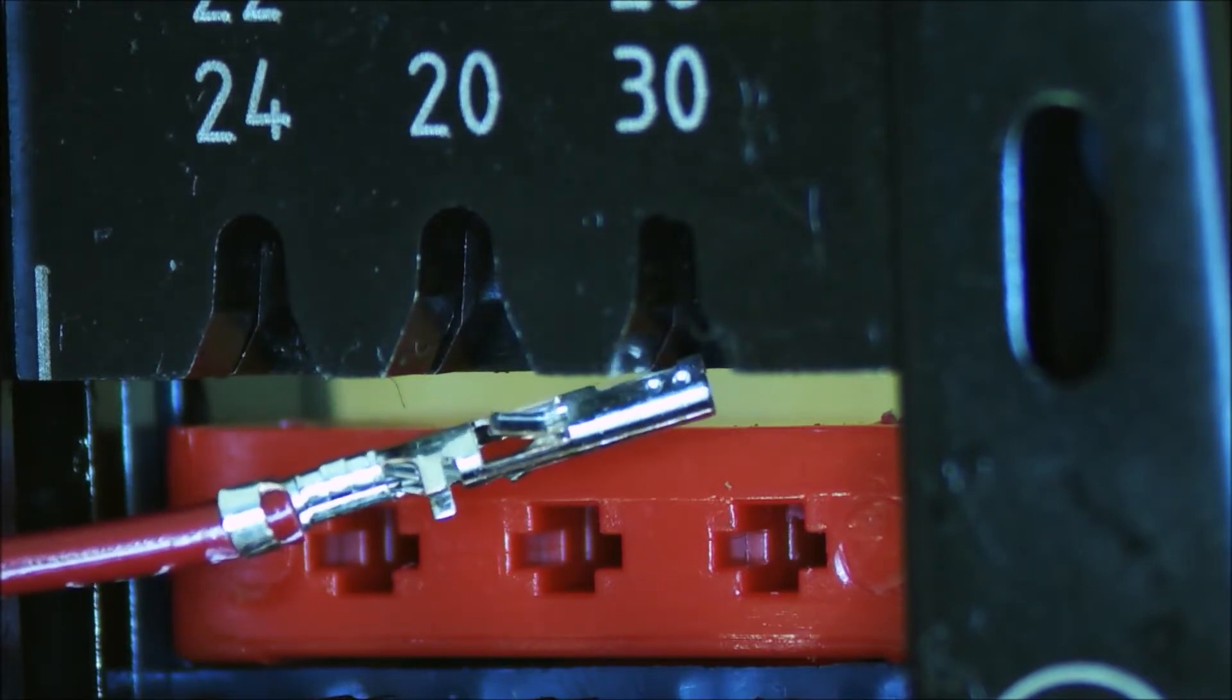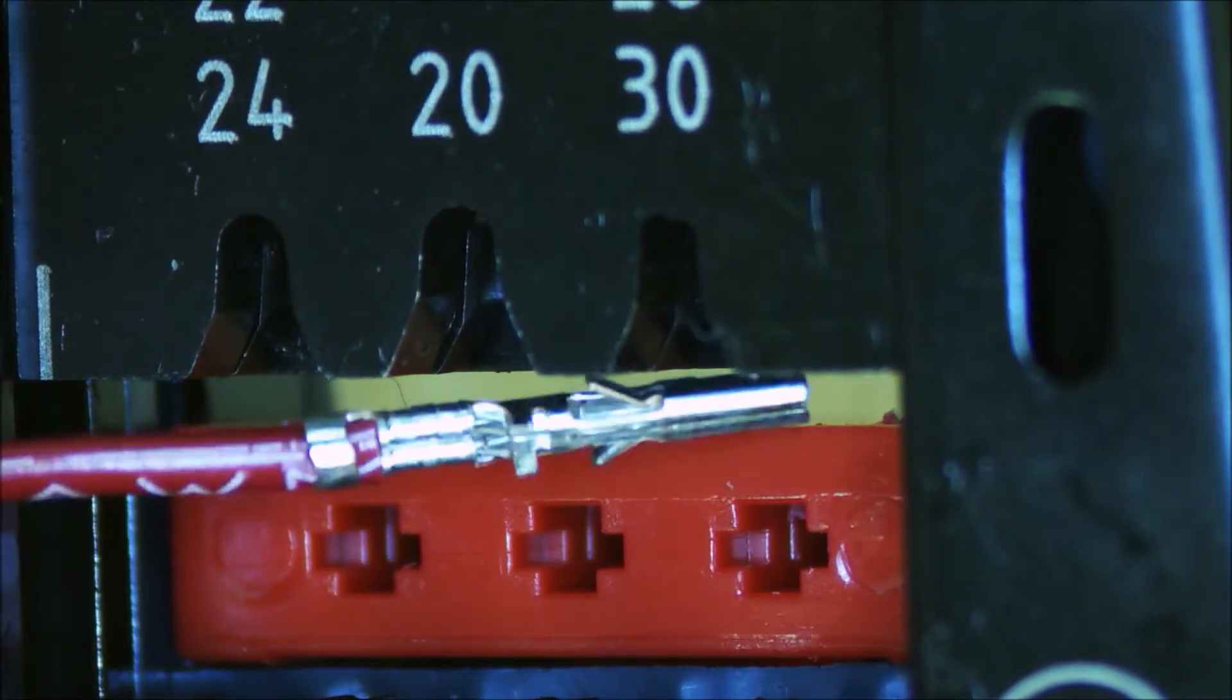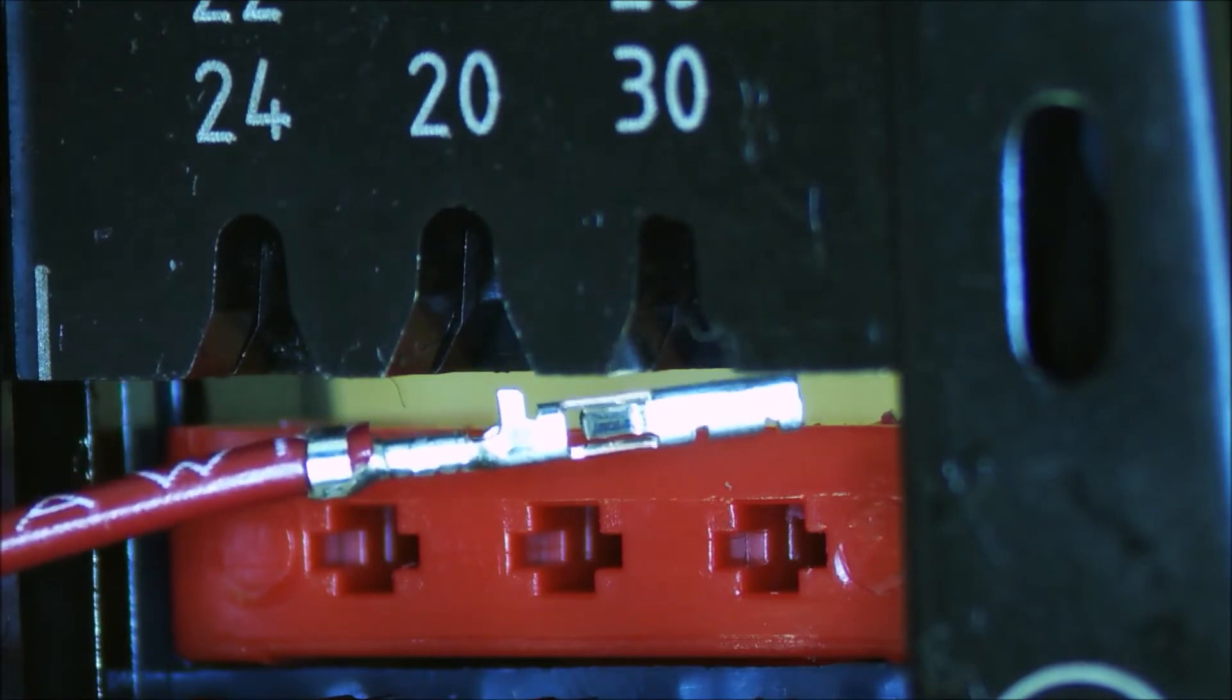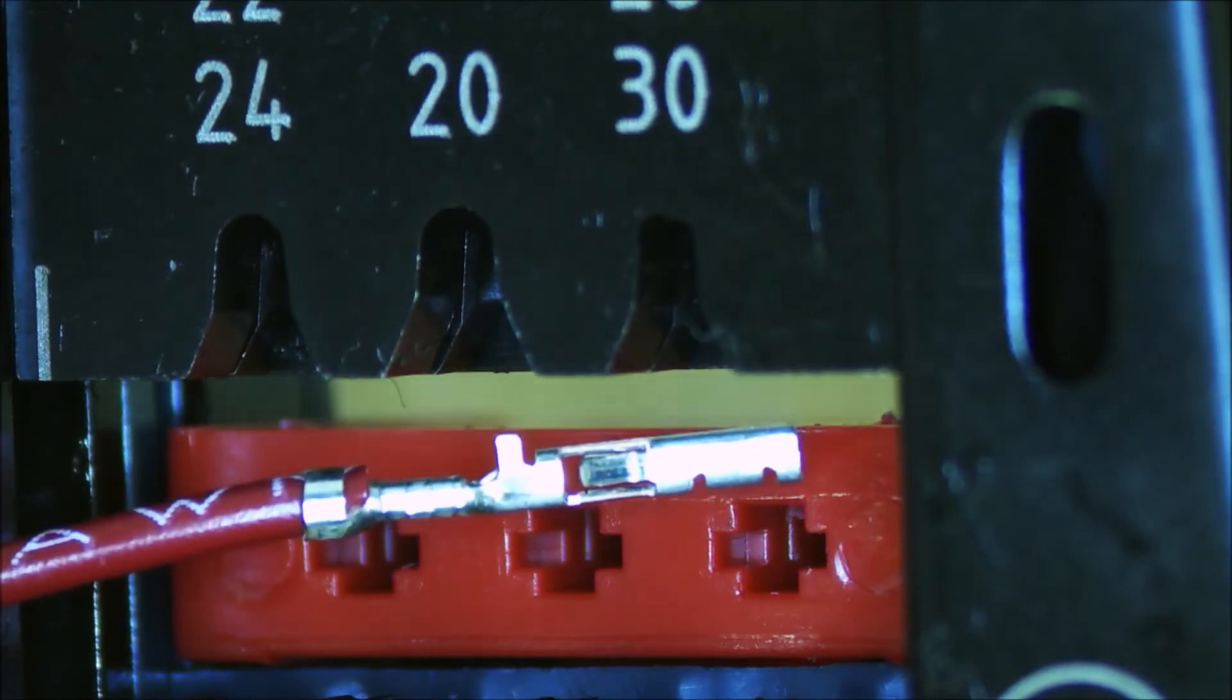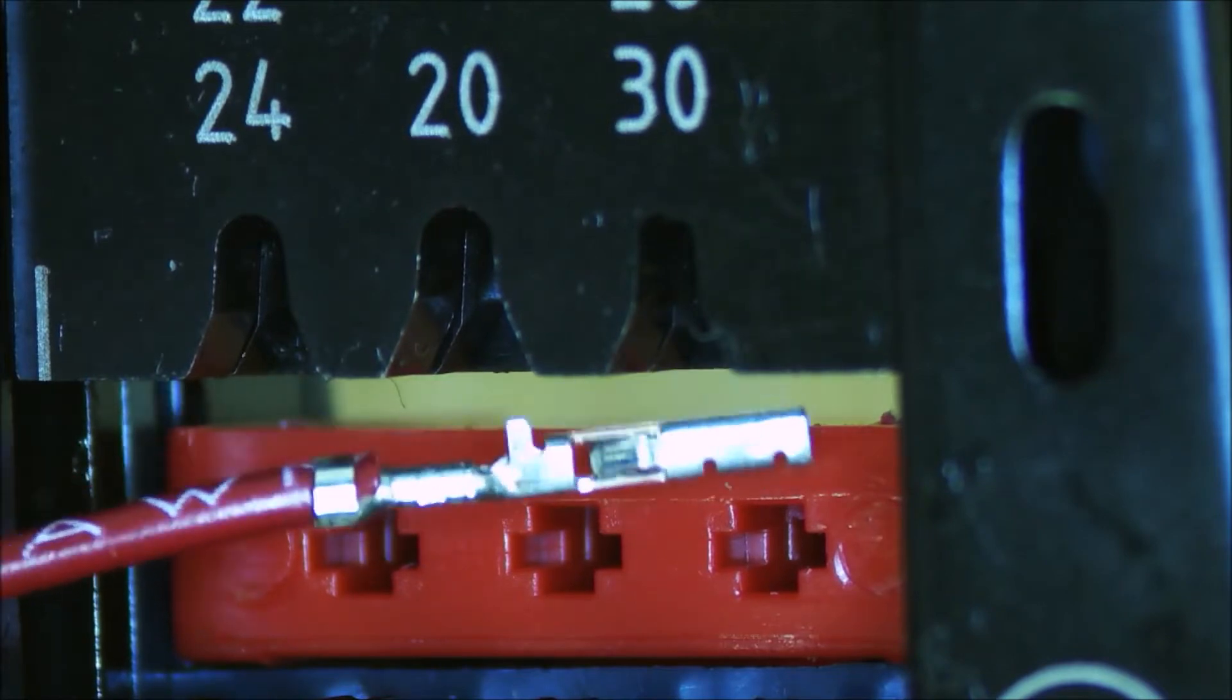Note the two sets of wings still sticking out. One set prevents the connector from going too far into the housing, while the other one prevents the connector from coming back out of the housing.